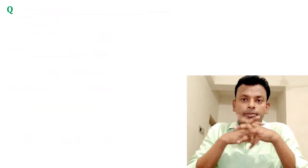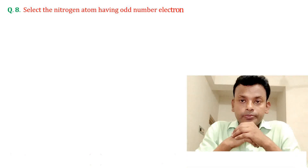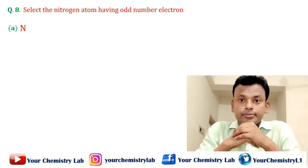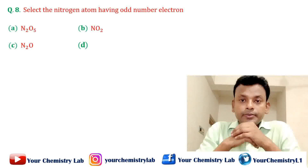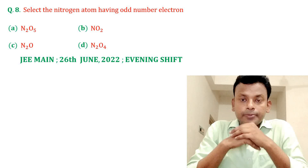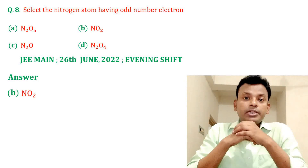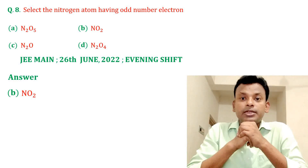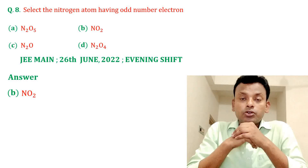Question number eight: select the nitrogen compound having an odd number of electrons. Options A, B, C, and D are given. Answer: option B is correct, that is NO2. Nitrogen has 7 electrons and oxygen has 8 electrons, so the total number of electrons in NO2 is 23, which is odd.